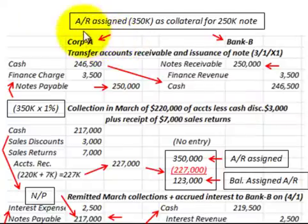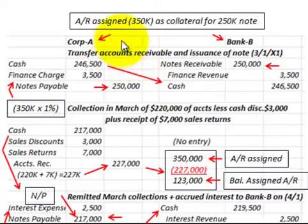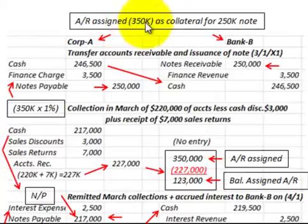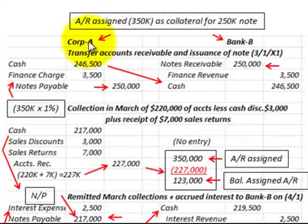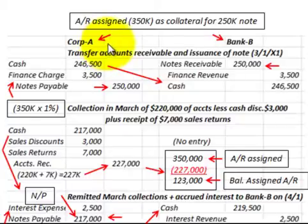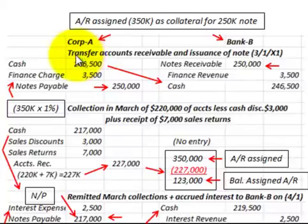We're going to look at Corporation A and Bank B in a side-by-side comparison. The accounts receivable of $350,000 are assigned from Corporation A to Bank B as collateral for a $250,000 note — a notes payable to Corporation A and a notes receivable to Bank B. Corporation A receives a loan in the form of a note from Bank B.